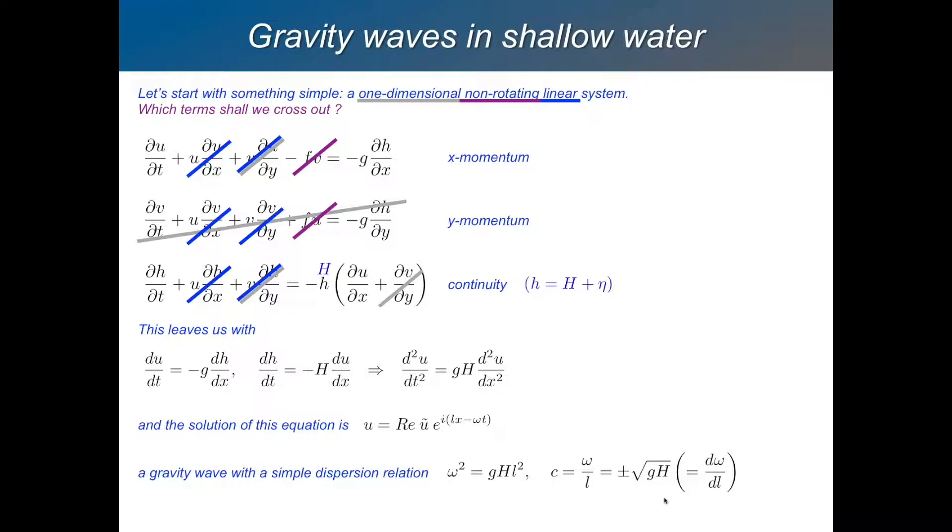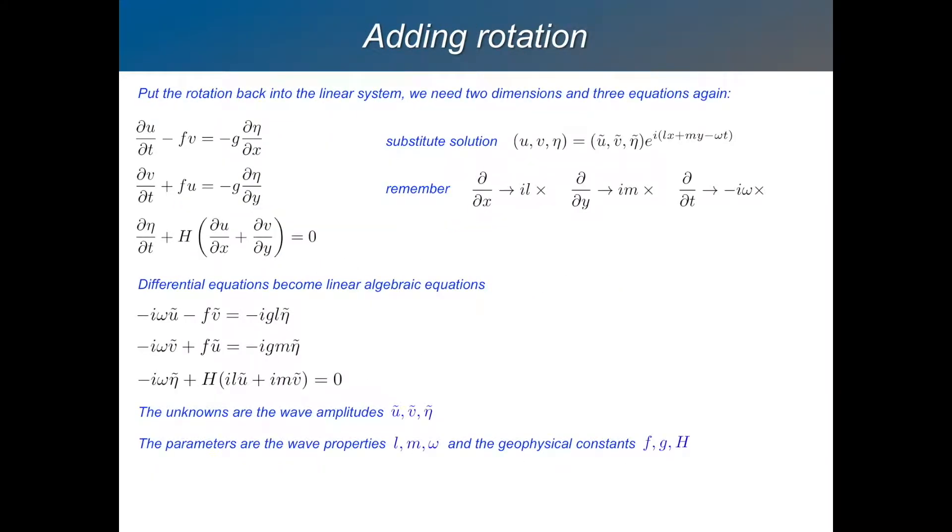So that's straightforward gravity waves. So the next thing to do is to put the rotation back in. So we're going to put these F terms, these Coriolis terms, back in. The first consequence of doing that is that we go back into a two-dimensional situation. We have to. We have to add this Y-momentum equation back in because the Coriolis force pushes perpendicular to the direction of movement.